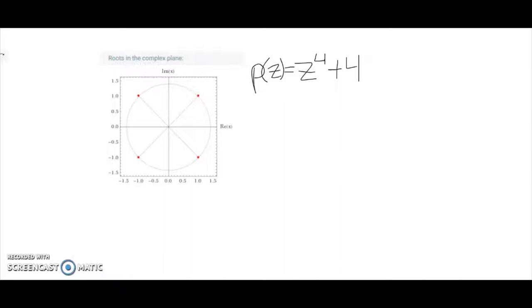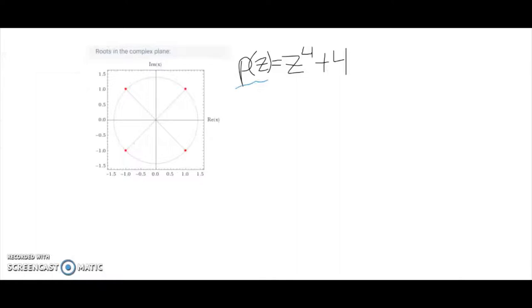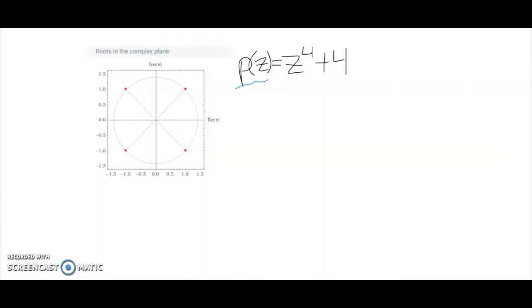Okay, so let's have a look at this example here. We have a polynomial as a function of z: z to the power of 4 plus 4. Just looking at this polynomial equation, we can see that it is a real polynomial equation because of its coefficients. The coefficient of z^4 is just positive 1, that's a real number.